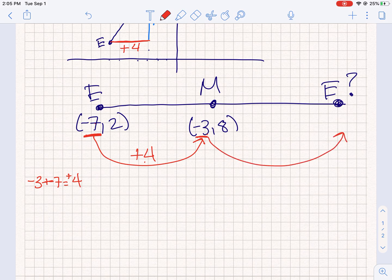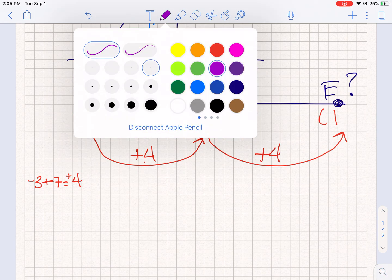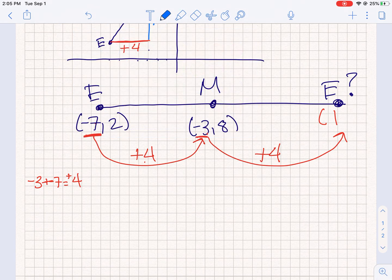So I am going to do that same process. -3 plus 4, which would give me positive 1. So that would be how I would find that x-coordinate.